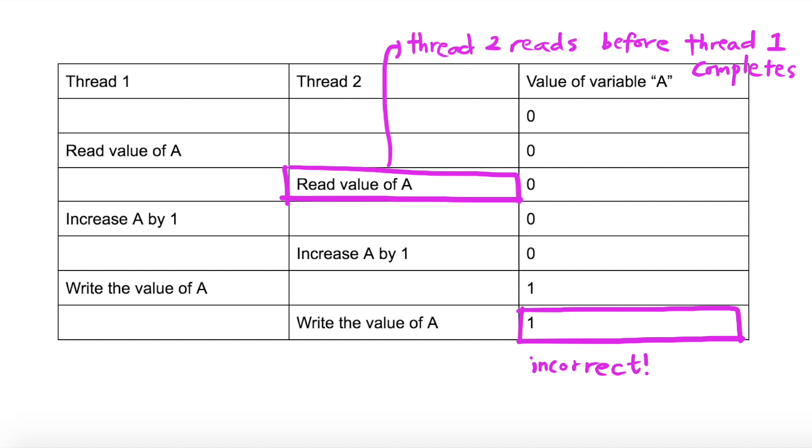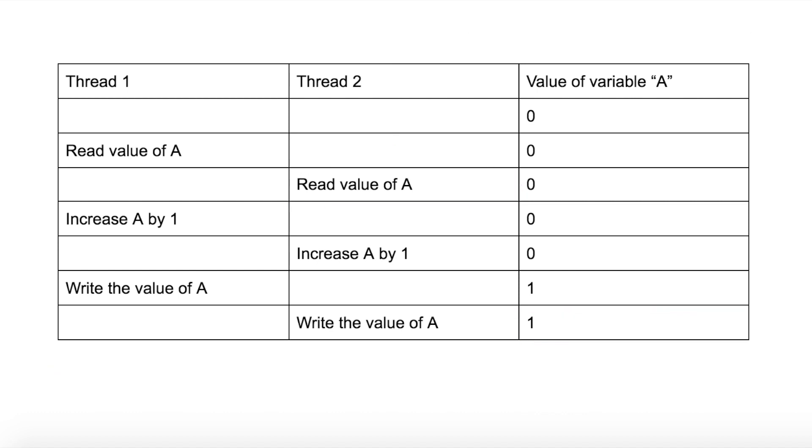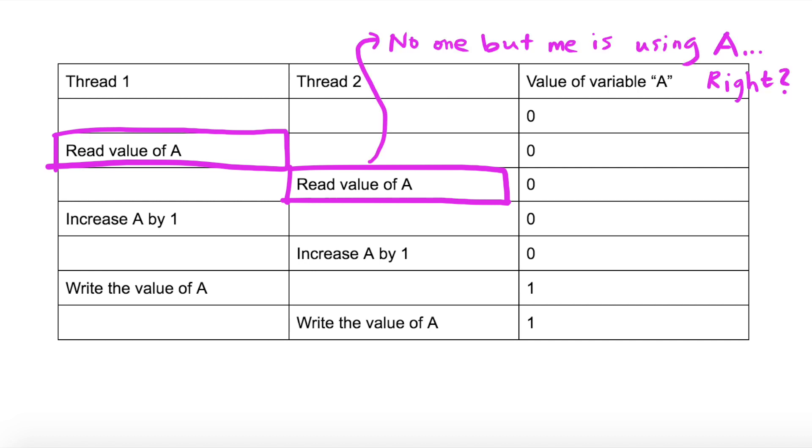Race conditions happen when the outcome of the execution of one thread depends on the outcome of another thread, and when the two threads operate on the same resources without considering that other threads are also using the same resources. When these two threads are executed simultaneously, unexpected outcomes can occur.